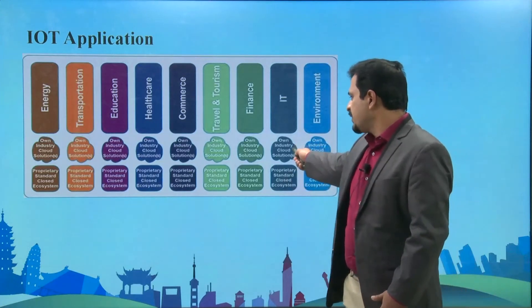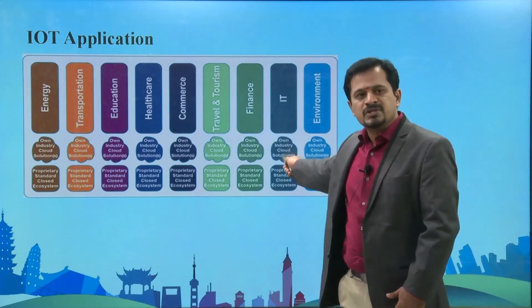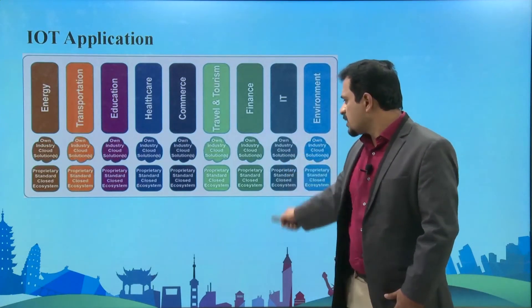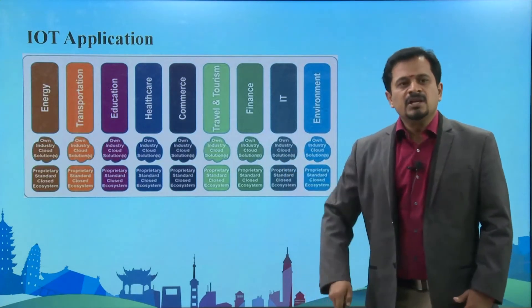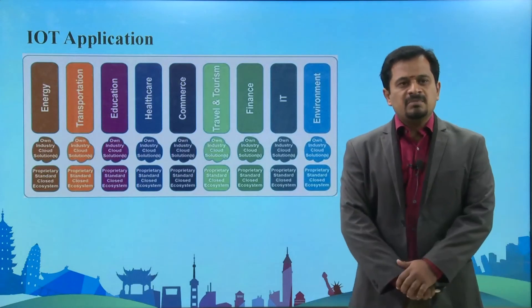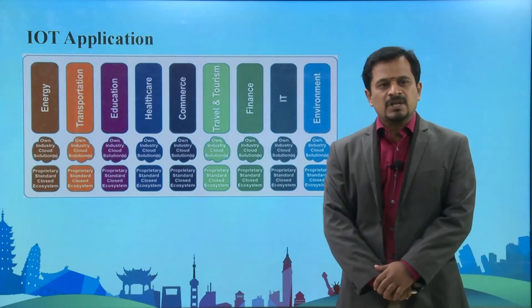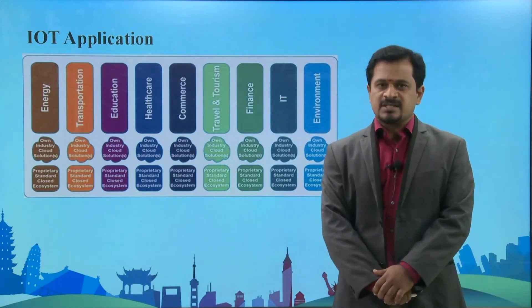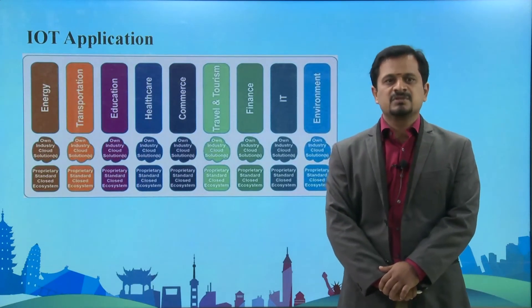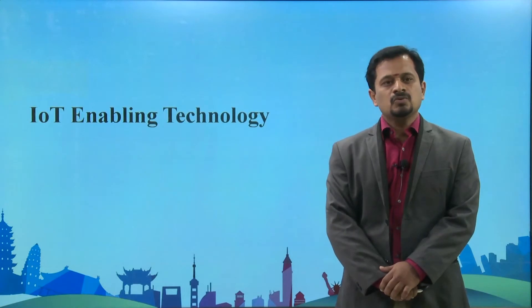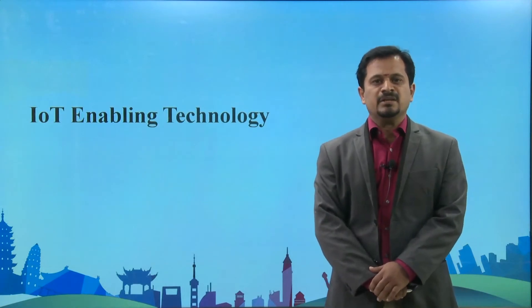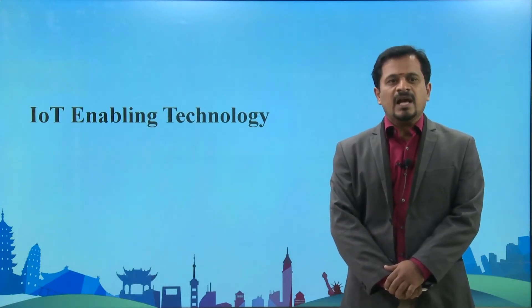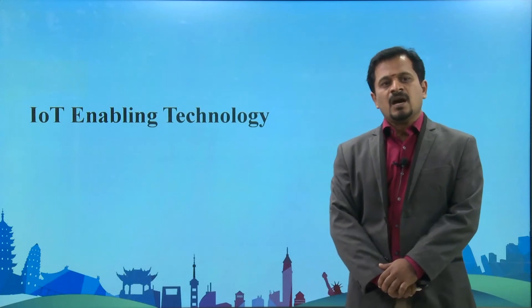Each and every domain is going to have an industry cloud which is going to have its own system. These clouds are completely proprietary based as well as eco-friendly standard systems. This is how enabling technologies will help the Internet of Things.